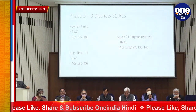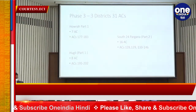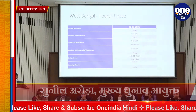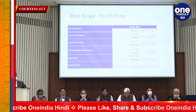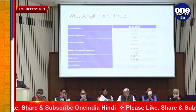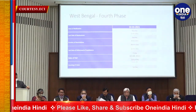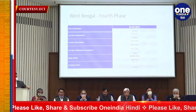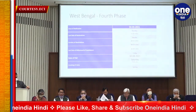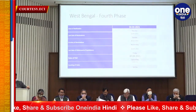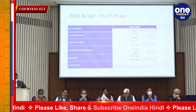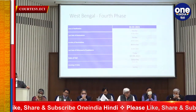Phase 4: 44 Constituencies. Issue of notification: 16th March. Last date of nominations: 23rd March. Scrutiny of nominations: 24th March. Last date of withdrawal: 26th March. Date of poll: 10th April.